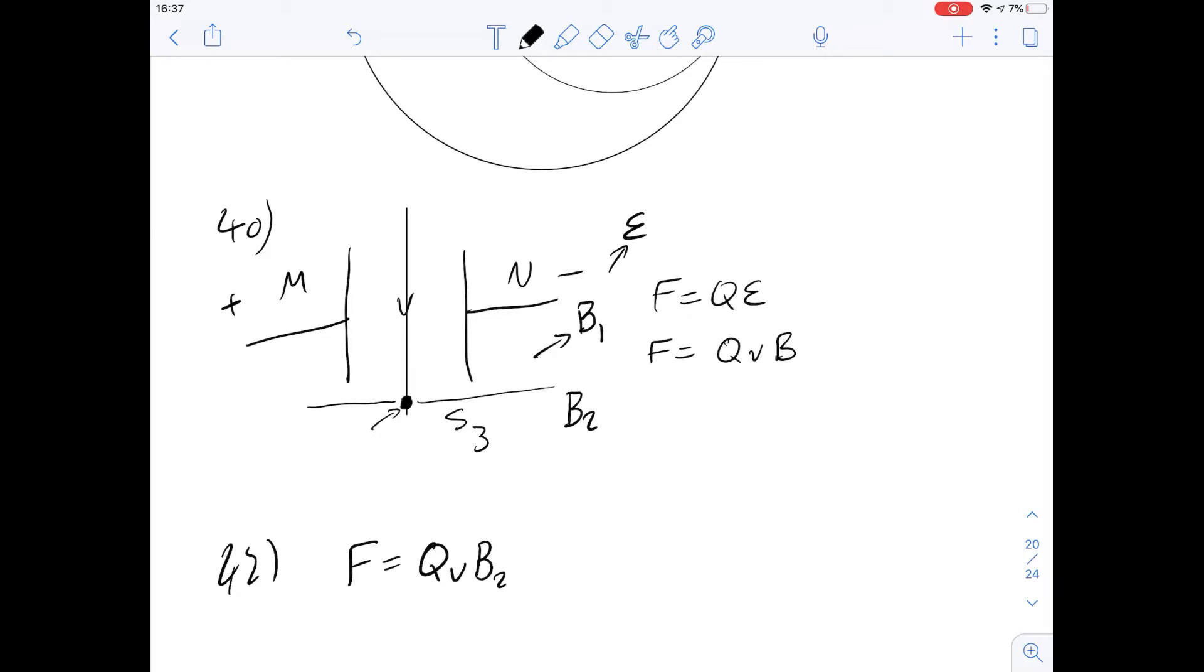So we've got these two equations that they've given us, so we could actually just combine these and say QE equals QVB. We can divide by Q on both sides and get E equals VB. And remember we're dealing with B1 here. So then the velocity, which is what we're trying to find, is going to be E divided by B1, and that gives us answer B.